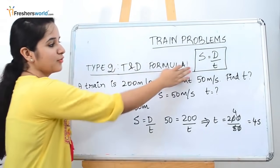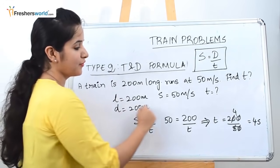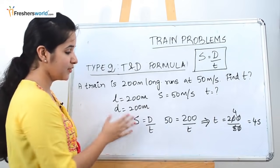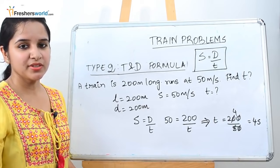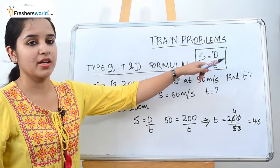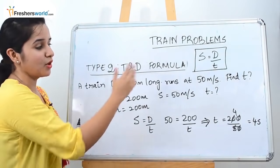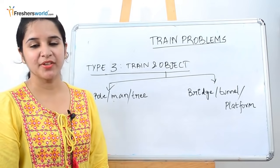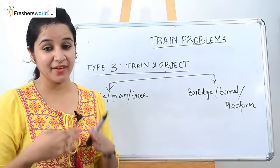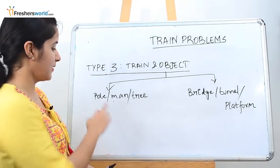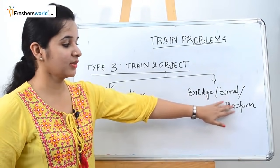Now you understand the formula much better. In this question they gave the distance and asked you to find the time. In certain questions they will give you the distance and time and ask you to find the speed. They will always give two variables from the formula and ask you to find the third. Type 3 is train and an object. In type 3 there are two sub-types: one is a train crossing a pole, a man, or a tree; the other is a bridge, tunnel, or platform.